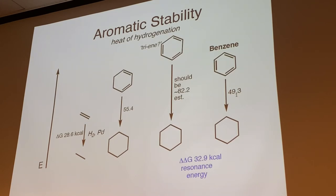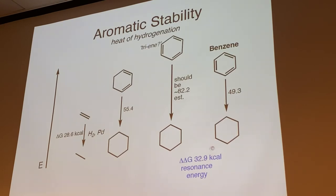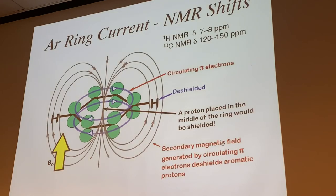That resonance stabilization energy is also reflected in reactivity: we don't get a dibromide in electrophilic substitution, we get a monobromide with a catalyst. We have to overcome that resonance energy. The aromatic stability of about 30 kcal/mol is something special about aromaticity beyond ordinary conjugation, and you can see it both in hydrogenation data and in the unusual substitution reactivity.